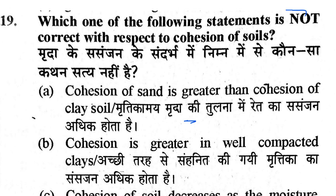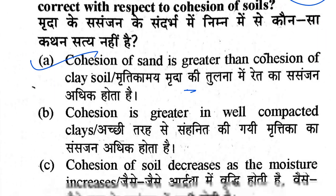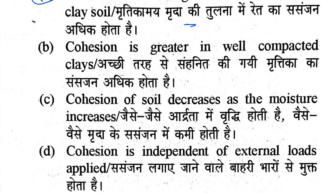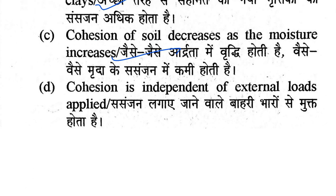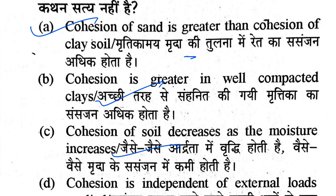Question number 19: Which of the following statements is NOT correct with respect to the cohesion of soil? Option A states that cohesion of sand is greater than cohesion of clay — this is incorrect, because sand has negligible cohesion while clay has significant cohesion. Other options: cohesion is greater in well-compacted clay — correct. Cohesion of soil decreases as moisture increases — correct. Cohesion is independent of external pressure — correct, as cohesion is an intermolecular force. So option A is the answer — it is the incorrect statement.